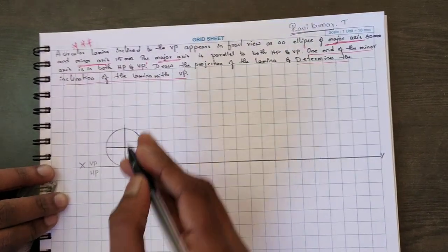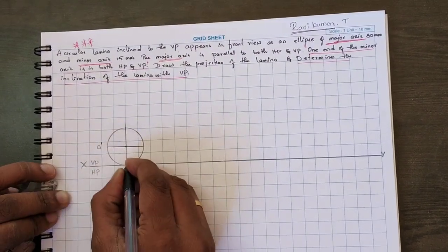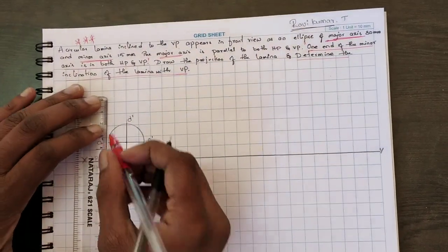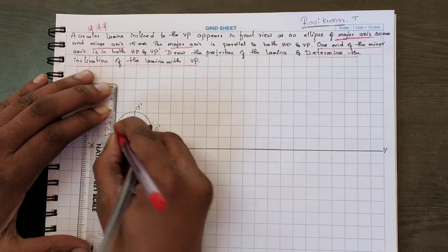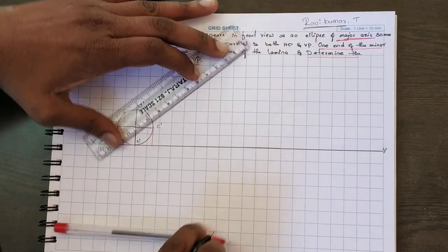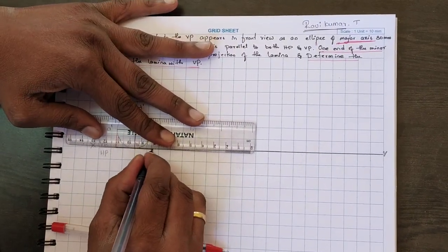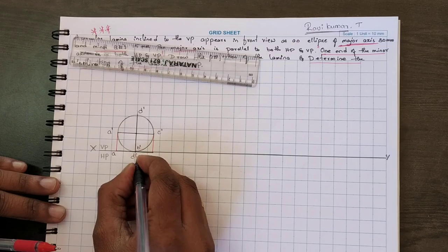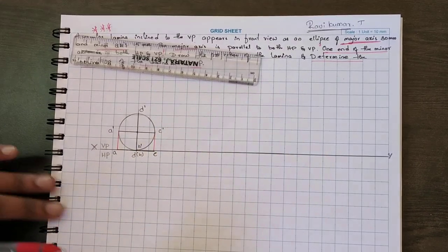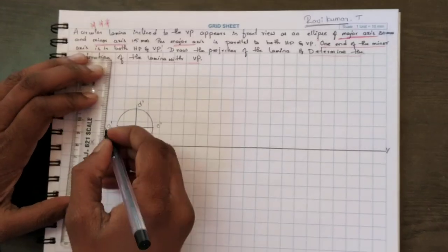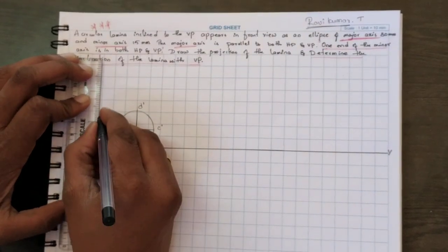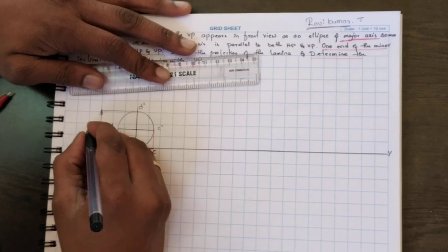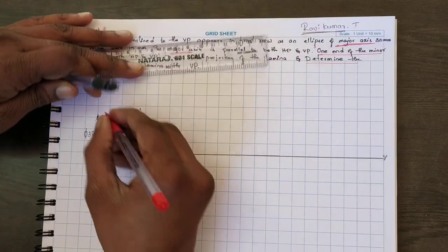Do the naming. Since it is on VP, this is a front view. I will take A dash, B dash, C dash, and D dash. Draw projection lines downward — I will take it on the XY line only. This is your A. You are looking from the front of the object, so D is visible and B is not visible. Show the dimension — this is your diameter 30mm. So this is the major axis.